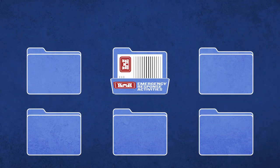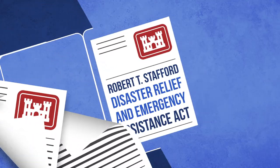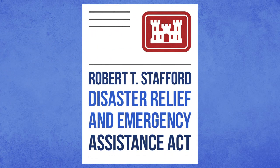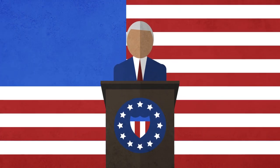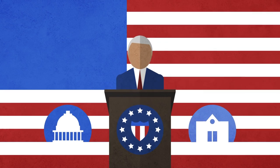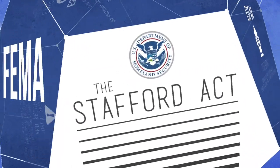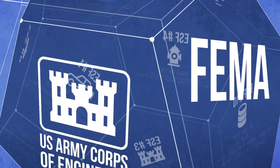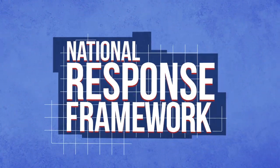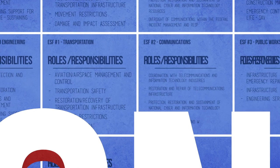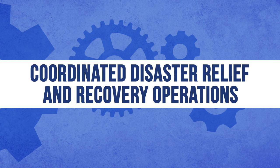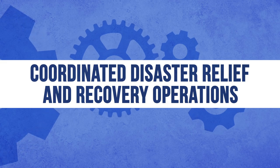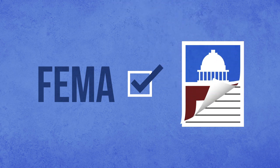Other USACE emergency response activities are performed under the authority of the Robert T. Stafford Disaster Relief and Emergency Assistance Act, or Stafford Act. When the President declares a federal disaster at the request of a state or tribe, it activates a network of assistance. The Stafford Act gives FEMA the federal lead, with help from contributing federal agencies. The National Response Framework assigns specific roles and responsibilities to 30 federal departments and agencies to provide coordinated disaster relief and recovery operations as requested by the state or tribe. Only FEMA may accept a mission request from a state or tribe under the Stafford Act.